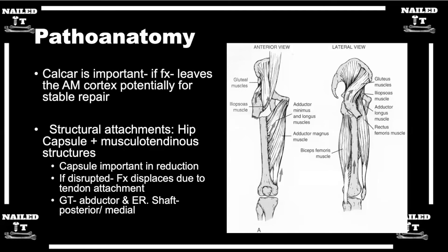Definitely pay attention to the lesser trochanter, because if it's still intact, you can have even more — varying degrees of moments of flexion of that proximal fragment.